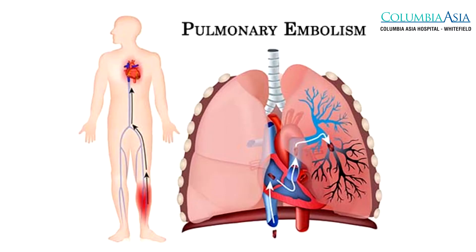Some of the dreaded complications of deep vein thrombosis is a condition called pulmonary embolism, where the clot gets dislodged from the veins of the legs, enters into the lung, and mortality is very high when a patient comes with a pulmonary embolism. In our hospital, me and the cardiology team have a very good rapport. When the patient comes with a pulmonary embolism, the cardiologist inserts a catheter into the pulmonary artery and we give injections to dissolve the clot.